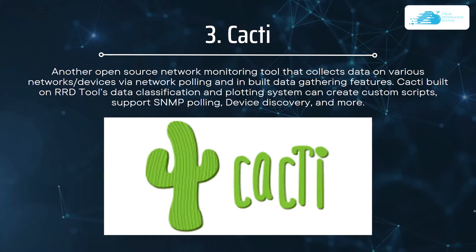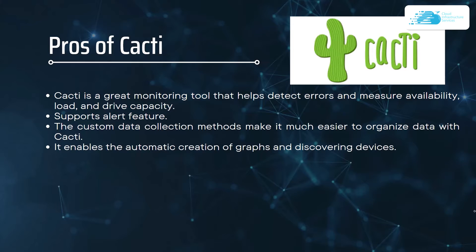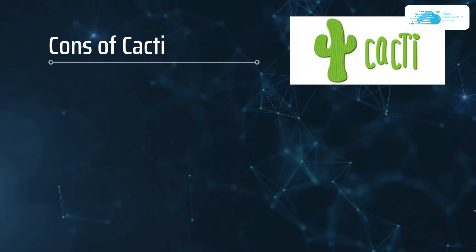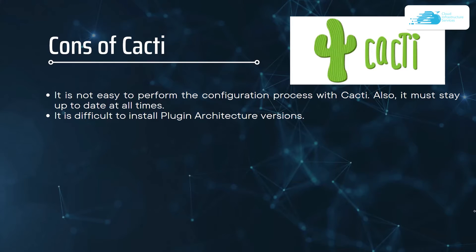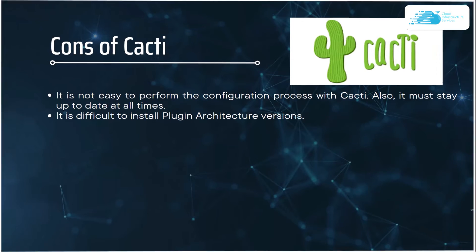Number three on our list is Cacti. Cacti is an open source network monitoring tool that collects data on various networks and devices via network polling and built-in data gathering features. It is built on RRD tools' data classification and plotting system, which can create custom scripts, support SNMP polling, devices discovery, and more. Cacti helps detect errors and measure availability, load, and drive capacity. It also supports the alert feature and custom data collection. The cons are that configuration is not easy, it must stay up to date at all times, and it is difficult to install plug-in architecture versions.